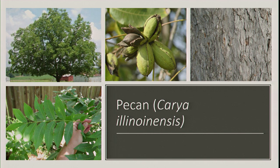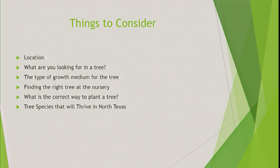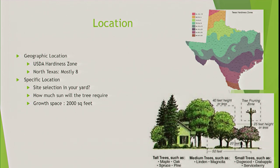That's my PowerPoint for tree ID. Next is planting a tree and everything involved. Things to consider: Where are you planting — front yard, backyard, side of home? What are you looking for — a large shade tree or something ornamental? What type of growth medium — containerized, ball and burlap, or bare root? Finding the right tree at the nursery, what a good quality tree looks like, the correct way to plant, and some tree species that will thrive in North Texas.